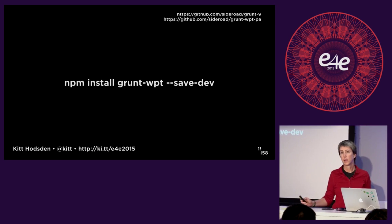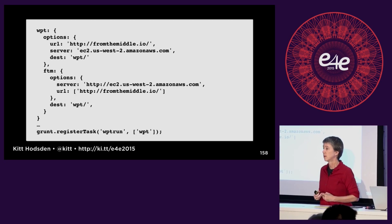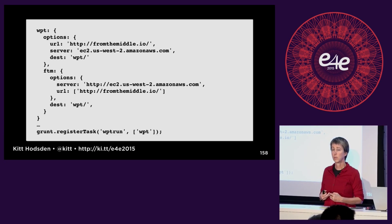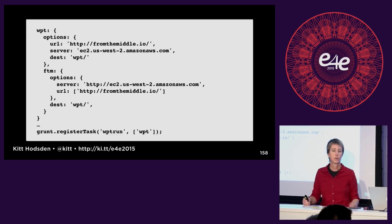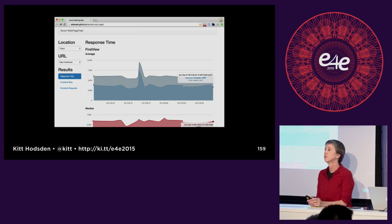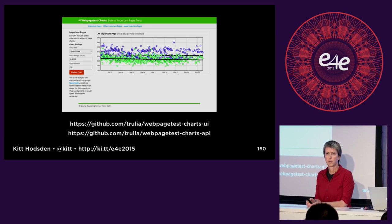We can run this from the command line, and from here we can define our own tasks — in this case when running from the command line we're not using the Grunt library and task name. When we run this we end up with pretty pictures stored locally, which is a good start. But maybe we want something a bit more robust. When these first came out I was happy seeing over time how my sites were performing — or particularly not performing.